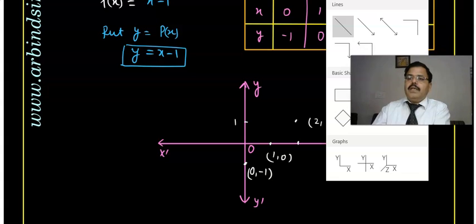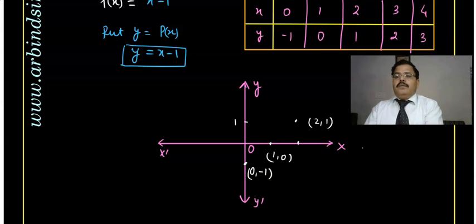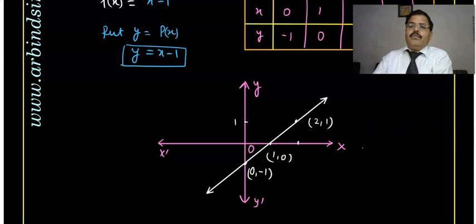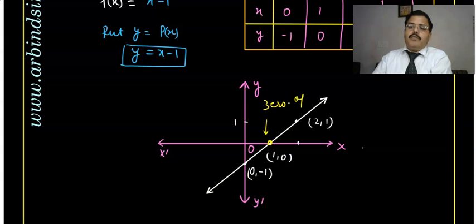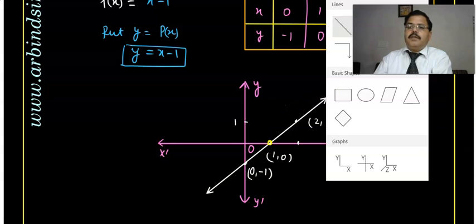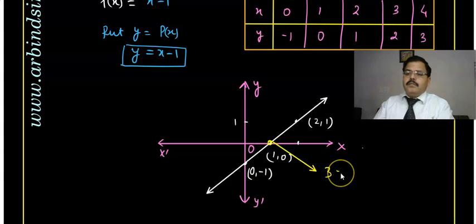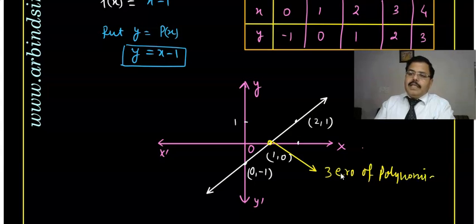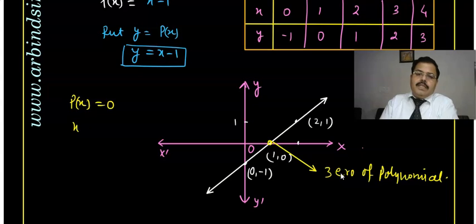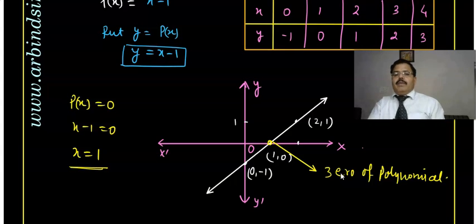The point where the line intersects the x-axis is called the zero of the polynomial. By algebraic method, you can also find it: put p(x) = 0, then x minus 1 = 0, so x = 1. Therefore x = 1 is the zero of the polynomial. Both graphical and algebraic methods give the same result.